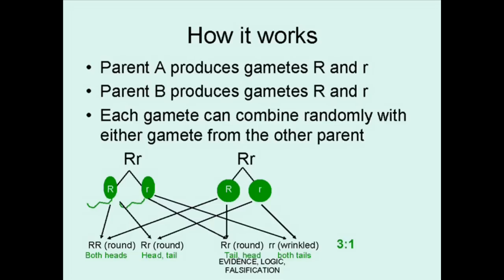You start with two purebreeding plants — it's easier to do with peas. One is a purebreeding round pea form and the other is a purebreeding wrinkled form, or lowercase r. You cross them, and all of the young will be a combination with one round characteristic, capital R, and one wrinkled characteristic, lowercase r. However, they will all be round since the round characteristic is dominant. Now the important thing is that each gamete can combine randomly with either gamete from the other parent, so you can get four possible combinations: round plus round, round plus wrinkled, wrinkled plus round, and wrinkled plus wrinkled.